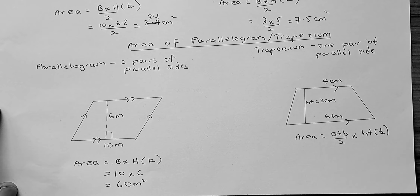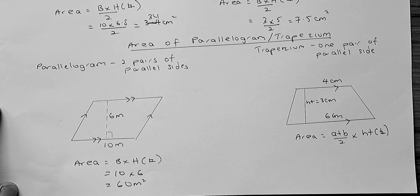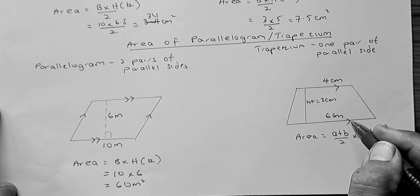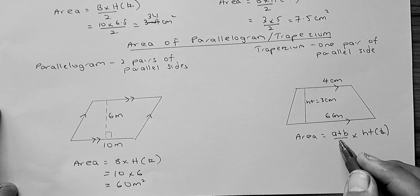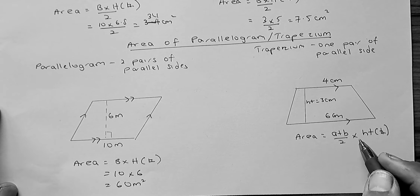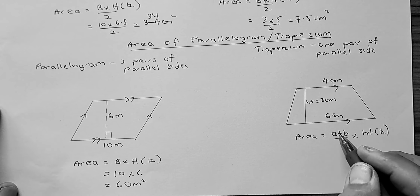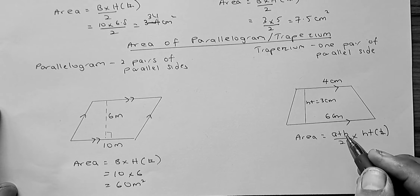The trapezium is the area which confuses a lot of people. You have only one pair of parallel sides. The area, to calculate the area of a trapezium is going to be a plus b divided by 2 times perpendicular height. a plus b, a and b are the parallel sides.